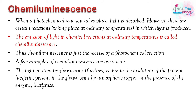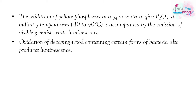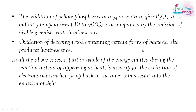So the question is: which enzyme is present and which protein? The answer is luciferin (protein) and luciferase (enzyme) respectively. A second example is: when yellow phosphorus undergoes oxidation in oxygen or air to give P₂O₅, phosphorus oxide, then visible greenish-white light is produced — that is also chemiluminescence. And decaying wood, when it undergoes oxidation in which there are some bacteria, some light is produced — that is also an example of luminescence. In all these cases, the energy is used for excitation of electrons, and when electrons jump from higher to lower orbitals, then light is emitted.